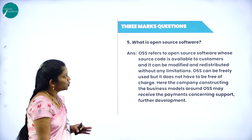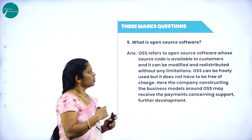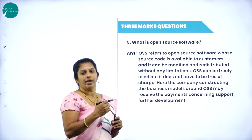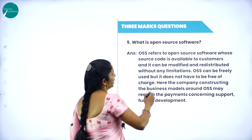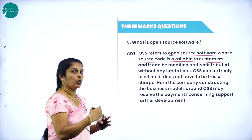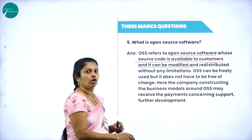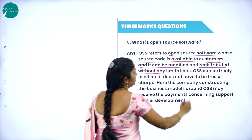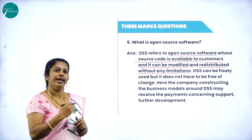What is open source software? This question can be expected for one mark as well as three marks. OSS stands for Open Source Software. Whatever source code is written for a program is available to the customer — it can be modified however the user wants and redistributed without any limitations, with no restrictions.